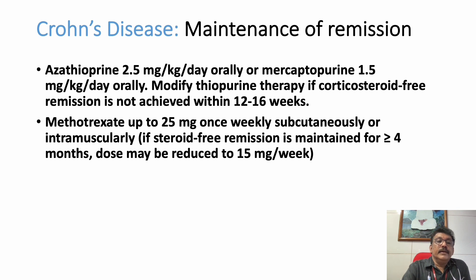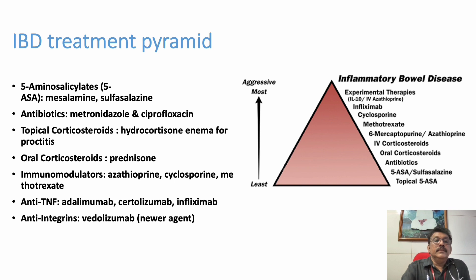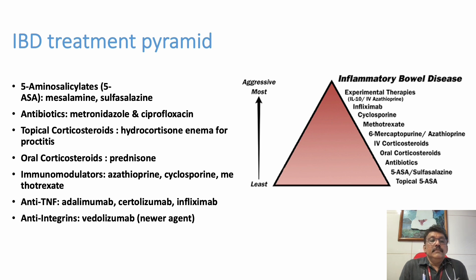For Crohn's disease maintenance, azathioprine 25 to 50 mg/day or methotrexate 25 mg once weekly with folic acid is given, and the dose can be slowly reduced. Looking at the pyramidal approach to IBD: we start with 5-aminosalicylates — mesalazine, sulfasalazine — then add antibiotics, followed by oral corticosteroids, then IV corticosteroids.